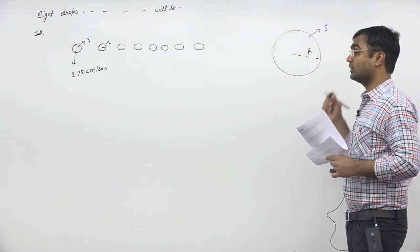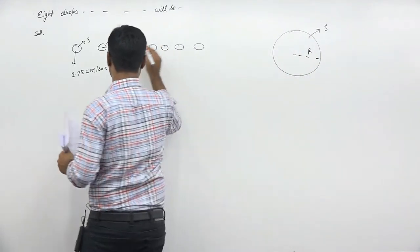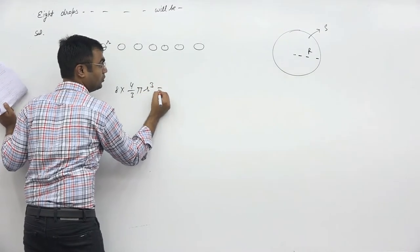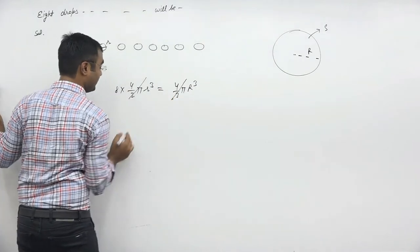By volume conservation, here the volume will be 8 into 4 by 3 pi r cube, and here will be 4 by 3 pi capital R cube. 4 by 3 pi is 4 by 3 pi.